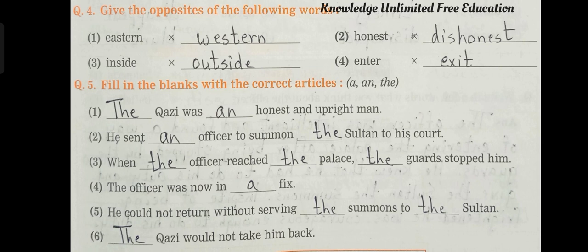Fill in the blanks with the correct articles — A, An, and The. Number 1 — The Qazi was an honest and upright man. Number 2 — He sent an officer to summon the Sultan to his court. Number 3 — When the officer reached the palace, the guards stopped him. Number 4 — The officer was now in a fix.